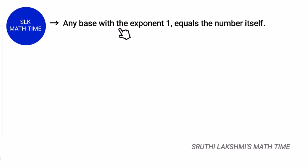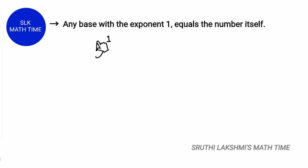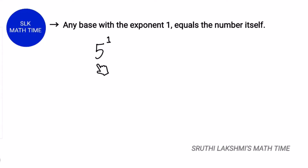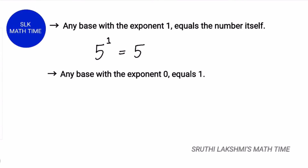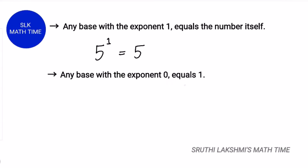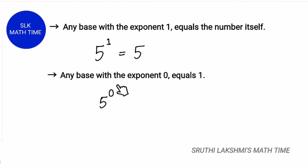Any base with the exponent of 1 equals the number itself. So 5 power 1 means we multiply 5 one time by itself, which equals 5. Any base with the exponent 0 equals 1, so 5 power 0 is 1.